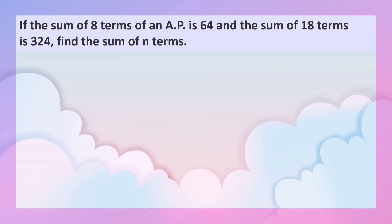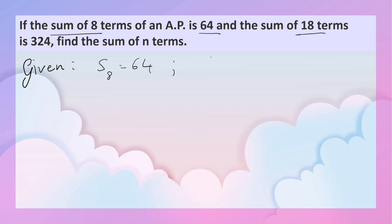If the sum of 8 terms of an AP is 64 and the sum of 18 terms is 324, find the sum of n terms. We are given S8 = 64 and S18 = 324. We have to find the sum of n terms.